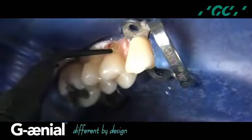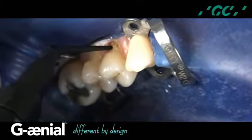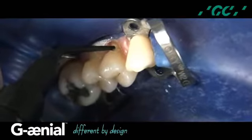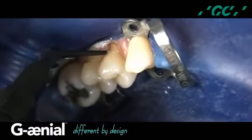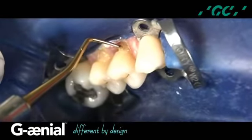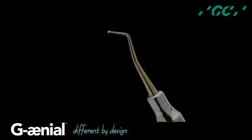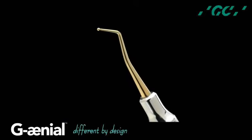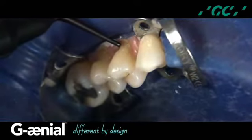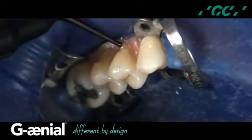The initial layer of A1 shaded Gineo Universal Flow is applied to the axial wall of the preparations with a syringe tip and uniformly distributed and adapted with a round tipped instrument, an M1 by American Eagle, and light cured for 10 seconds. A second layer of A1 shaded flowable is applied with a syringe tip.